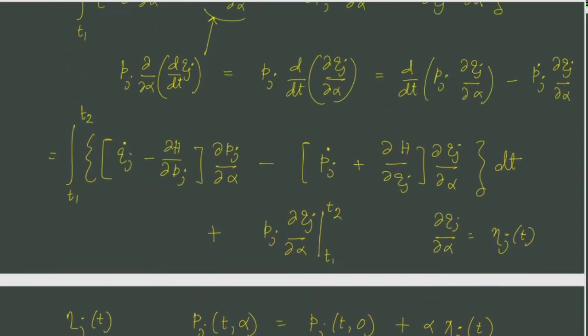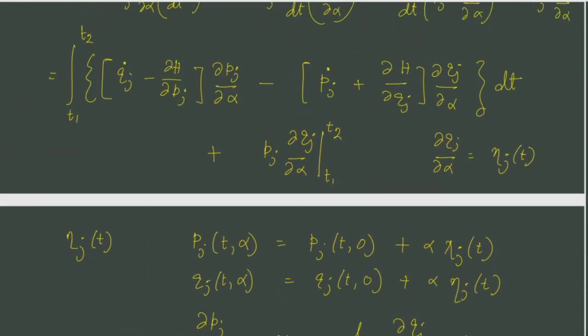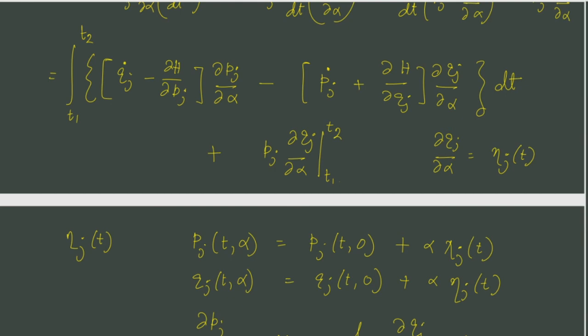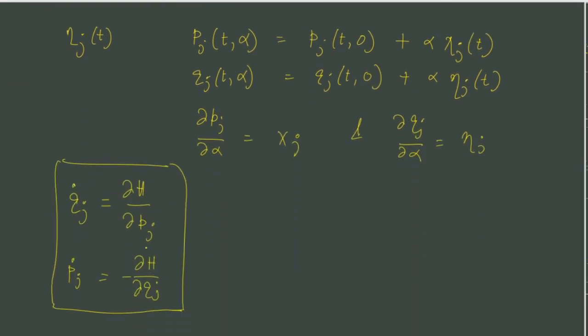So we see that if we modify Hamilton's principle by redefining the action integral, rewriting the action integral in terms of the Pj, Qj dot and minus the Hamiltonian, then from there we get the Hamilton's equations of motion. One big difference between these variations is for eta j.